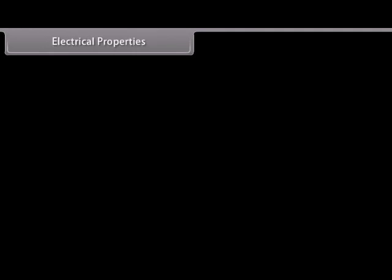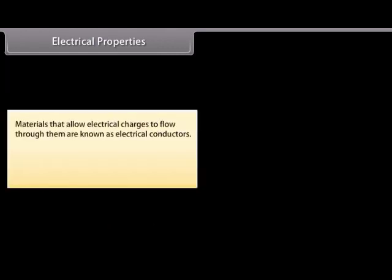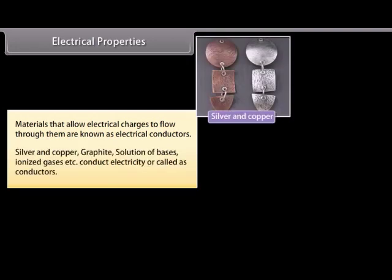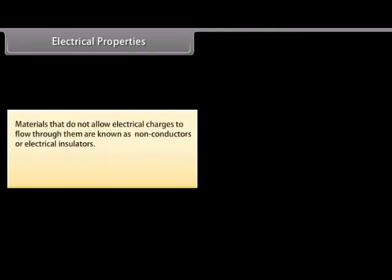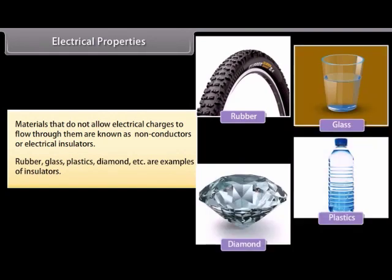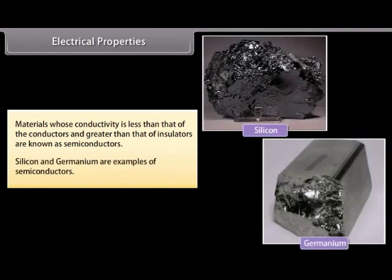Electrical properties: Solids can be classified into three types on the basis of their conductivities. Materials that allow electrical charges to flow through them are known as electrical conductors — silver, copper, graphite, solutions of bases, ionized gases, etc. Materials that do not allow electrical charges to flow are known as non-conductors or electrical insulators — rubber, glass, plastics, diamond, etc. Materials whose conductivity is less than conductors but greater than insulators are known as semiconductors; silicon and germanium are examples.